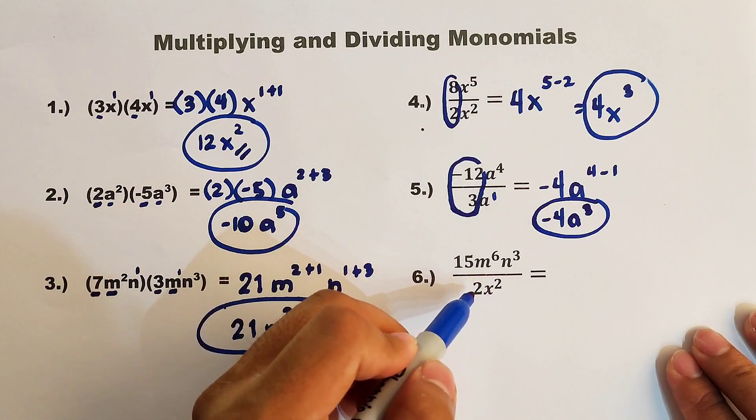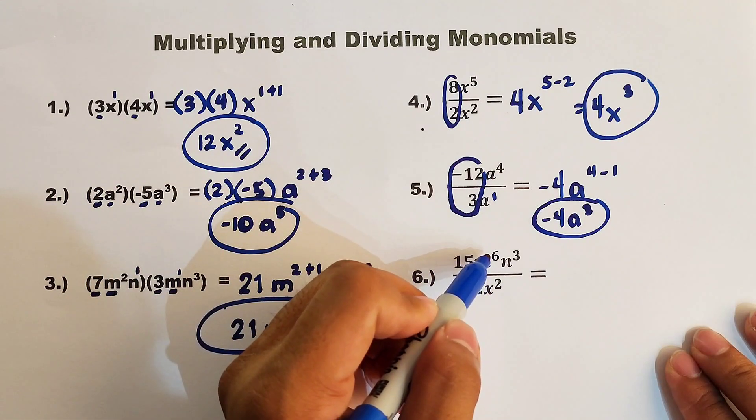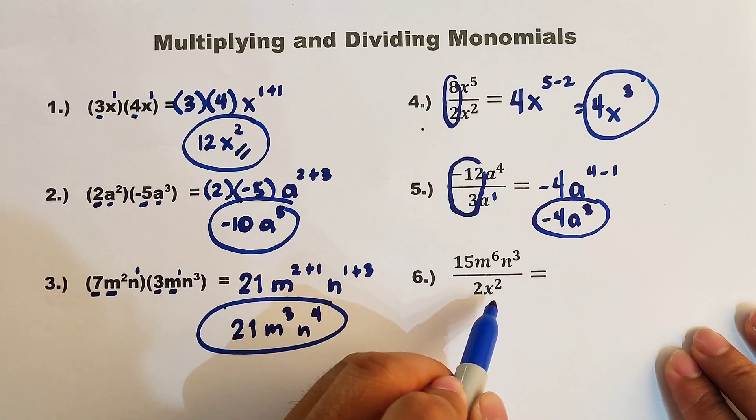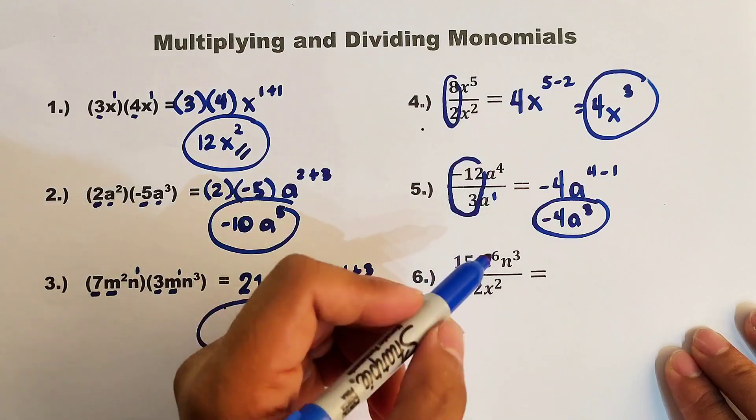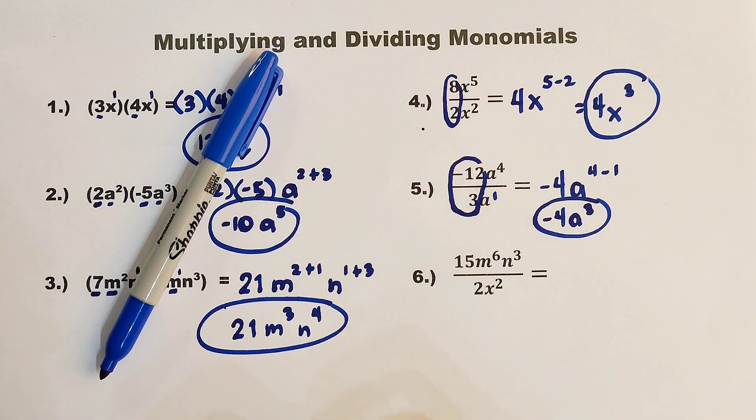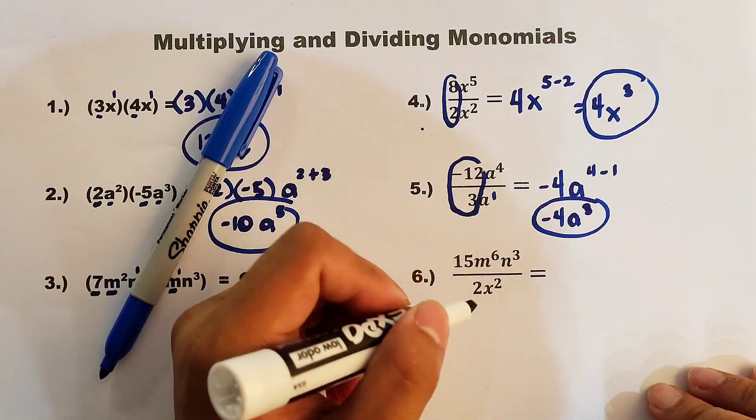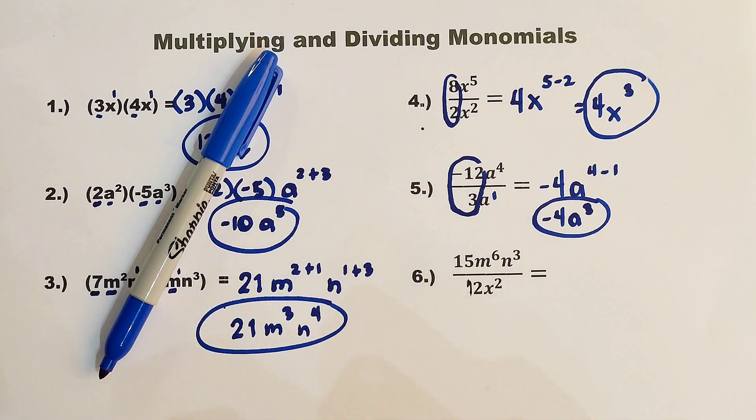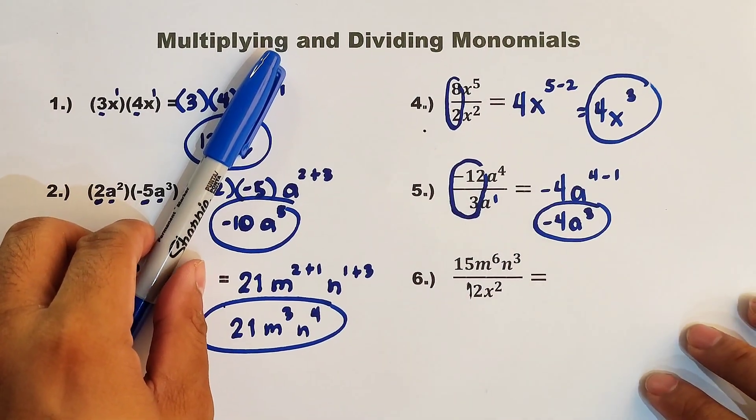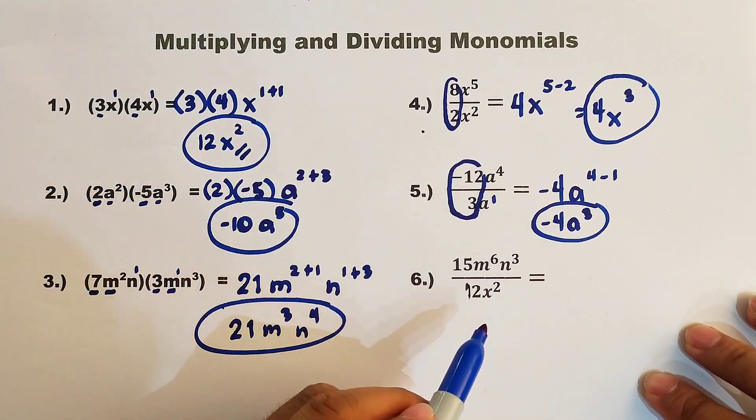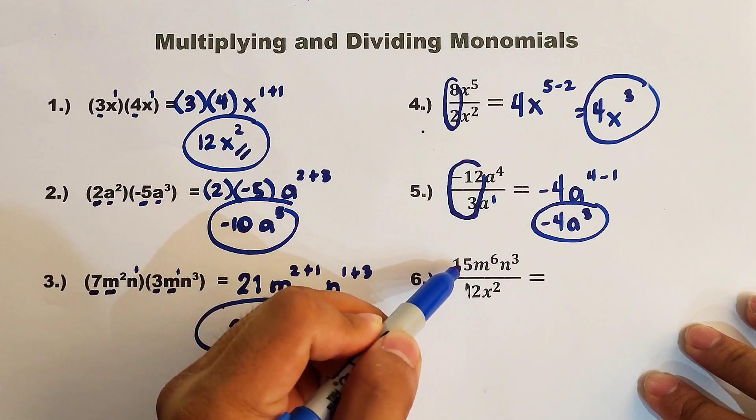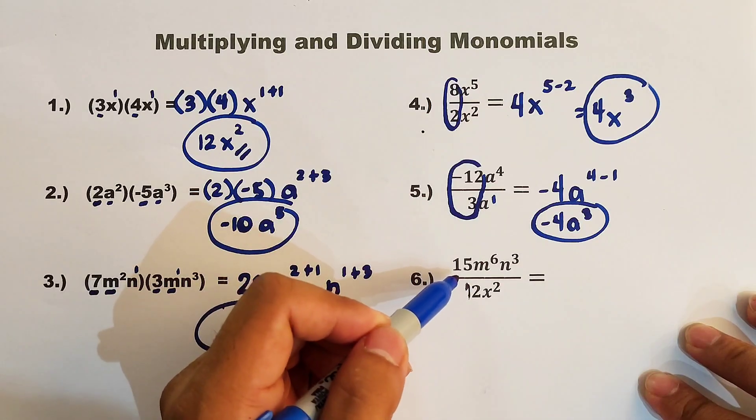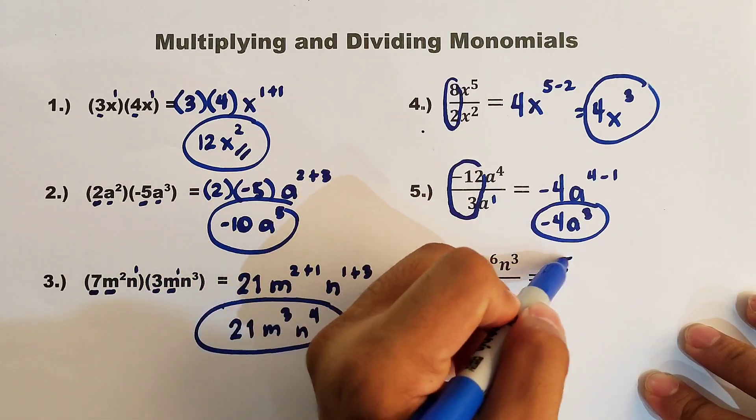Now, here, as you can see, we have 15m to the sixth power, n raised to the third power, over 2x raised to the second power. As you can see, I think there's an error here. I think I can make this equal to 12. Now, we will try to simplify this. 15 is not divisible by 12, so we can simplify the fraction. We have 5 over 3.